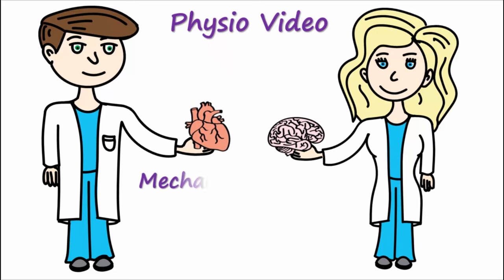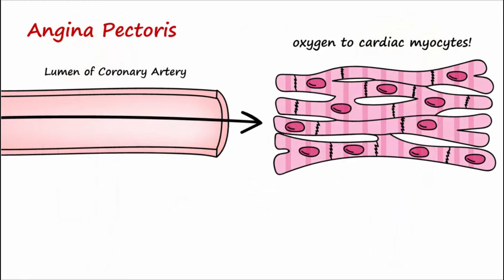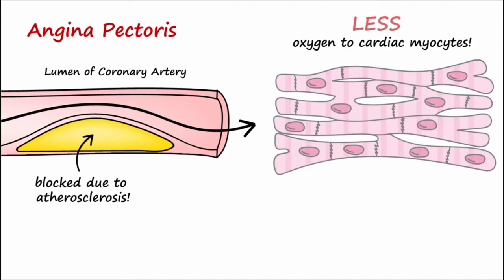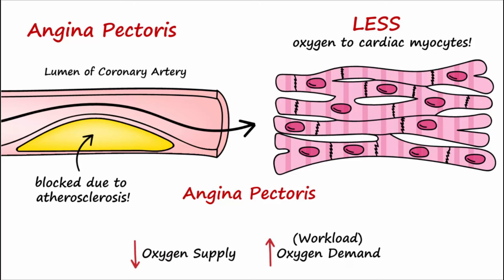Our topic today is the mechanism of action of nitroglycerin. When the coronary arteries become increasingly blocked due to atherosclerosis, less oxygen is delivered to the cardiac myocytes. This may result in chest pain, also called angina pectoris. This pain most often occurs when there is an increased workload or oxygen demand on the heart.